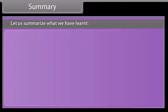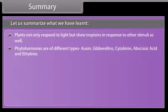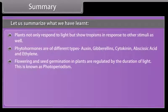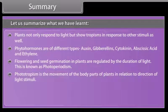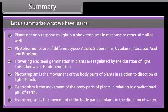Let us summarize what we have learned. Plants do not only respond to light but show tropisms in response to other stimuli as well. Phytohormones are of different types: auxin, gibberellins, cytokinin, abscisic acid, and ethylene. Flowering and seed germination in plants are regulated by the duration of light — this is known as photoperiodism. Phototropism is the movement of plant parts in relation to light stimuli. Geotropism is the movement of plant parts in relation to the gravitational pull of the earth. Hydrotropism is the movement of plant parts in the direction of water.